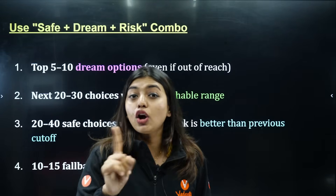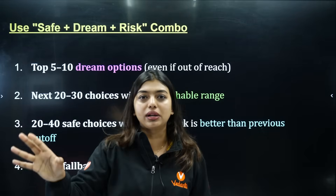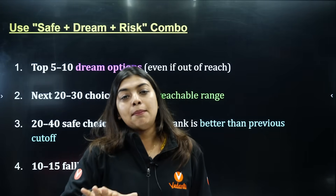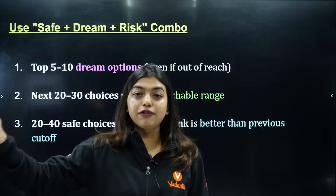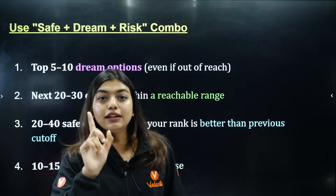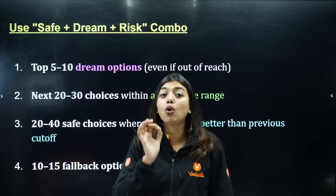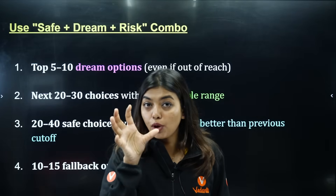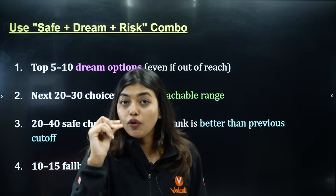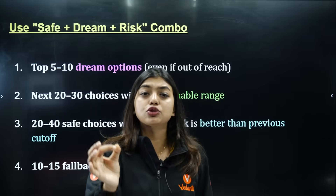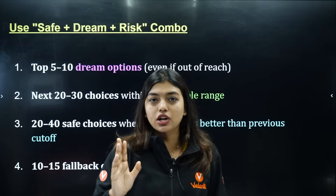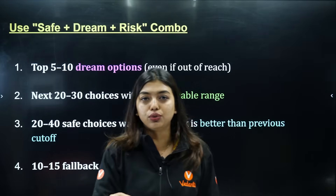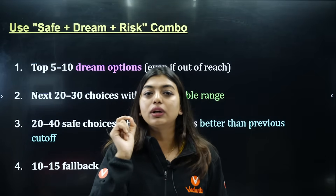Finally, keep 10 to 15 fallback options. Let's say nothing worked — dream, safe, realistic — all didn't come through. Your fallback options are the ones you still want and won't regret. Not the worst ones, but colleges you're okay with as a last resort. Inflation or rank changes may affect things, but you'll still have 10 fallback options you are not regretting.